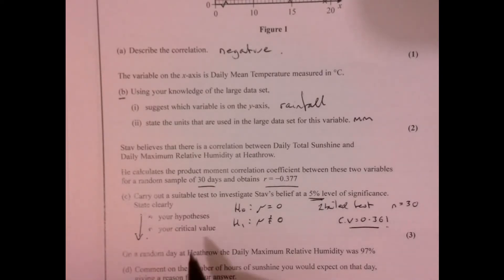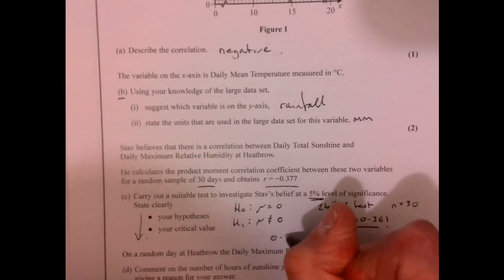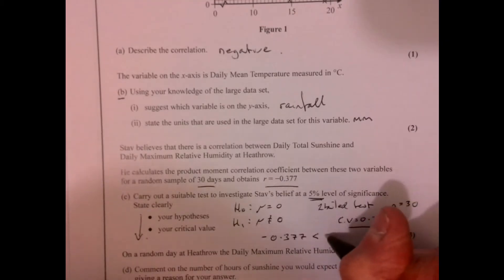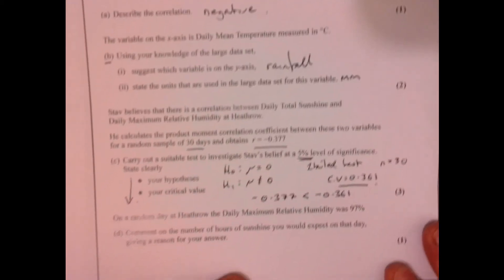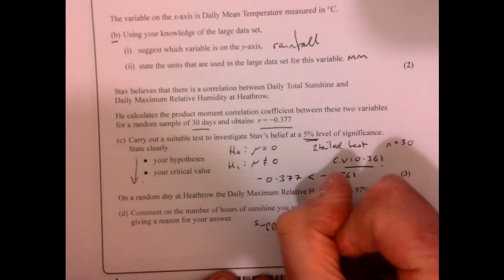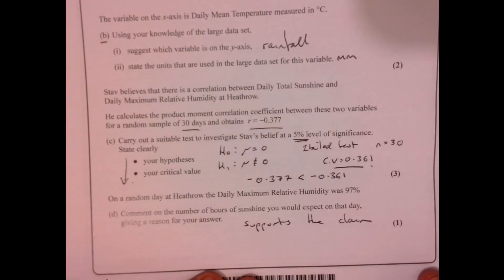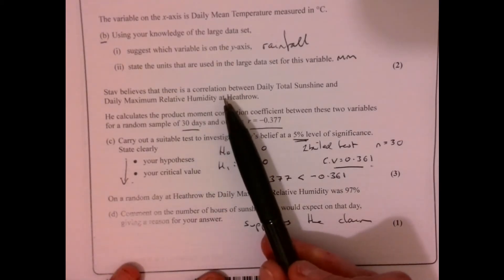Now we need to comment on that. We've got a negative one, haven't we? So if it was positive, I'd be commenting on it being more than this. I need to say our value is less than the negative version of this, so -0.377 < -0.361. What does that mean? It actually supports the claim. I'll write more detail and put it into context - there is a correlation between sunshine and humidity. You just need to say what you're told here.